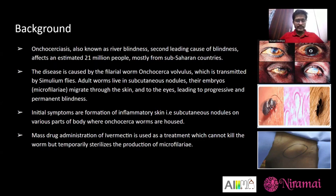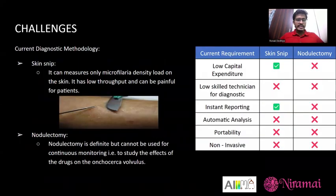As a treatment, ivermectin is given, which cannot kill the worm but can sterilize it, and hence avoid blindness or any other skin diseases. Current diagnostic methodologies include skin SNIP, which is a skin biopsy that can identify the microfilarial load on the skin. However, it has low throughput and can be painful for the patient. The second modality is nodulectomy, which is definitive but cannot be used for continuous monitoring — for example, if you want to study the effect of a drug on Onchocerca volvulus.